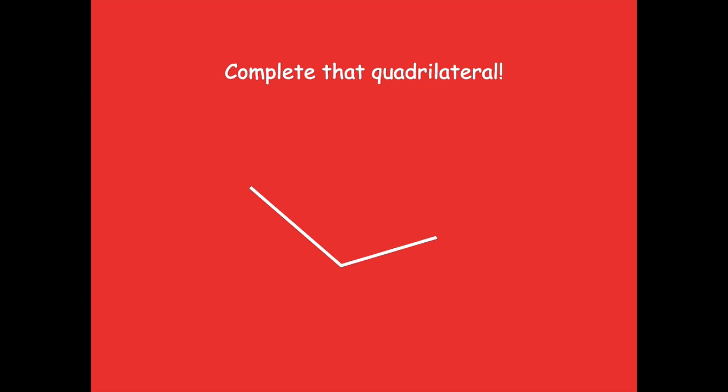Here's the first part of your shape. Complete that quadrilateral! Pause the video, draw a quadrilateral, then click play. Complete that quadrilateral — there we go, because a quadrilateral has four sides. As long as you drew two more sides onto here, you've drawn a quadrilateral, even if yours looks different than mine. As long as you have four sides, you nailed this one.